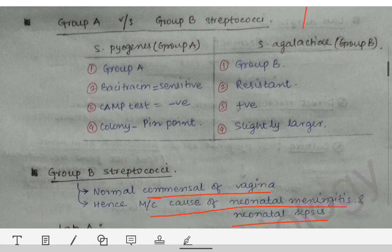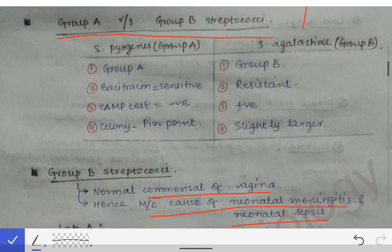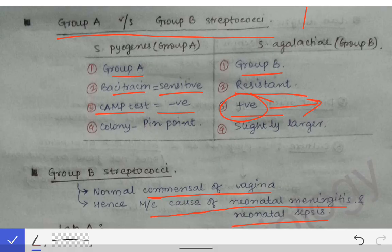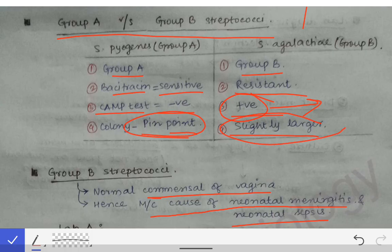The key differences between Group A and Group B Streptococcus: Streptococcus pyogenes is Group A; Streptococcus agalactiae is Group B. Pyogenes is bacitracin sensitive; agalactiae is bacitracin resistant. CAMP test is negative for pyogenes and positive for agalactiae, due to the presence of the CAMP factor (phospholipase) in agalactiae but not in pyogenes. Regarding colony size, pyogenes produces pinpoint colonies, while agalactiae produces slightly larger colonies.